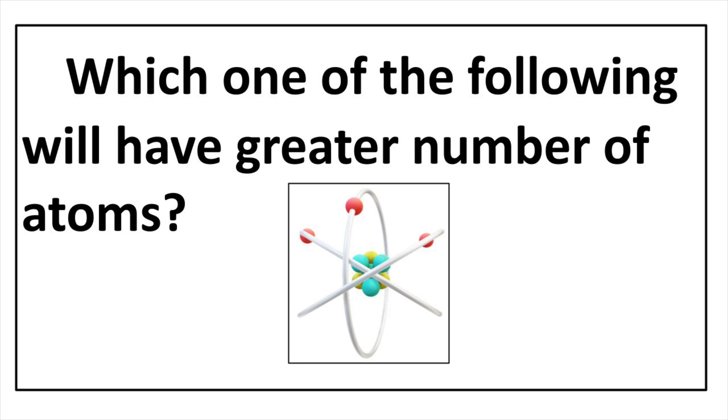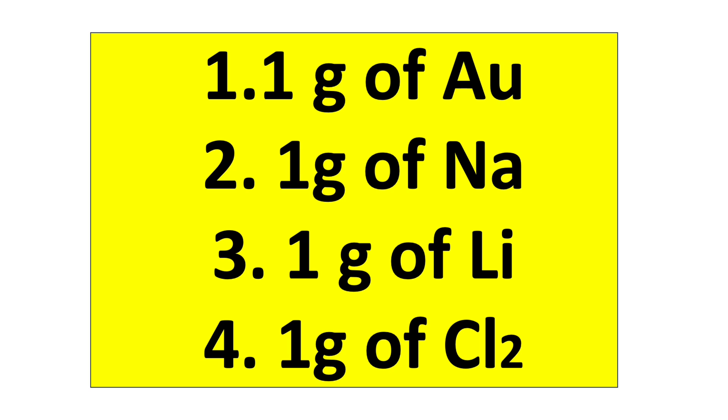Welcome to Aurora Chemistry for Everyone. Let us find out which one of the following will have the largest number of atoms: 1 gram Au, 1 gram Na, 1 gram lithium, 1 gram chlorine gas.